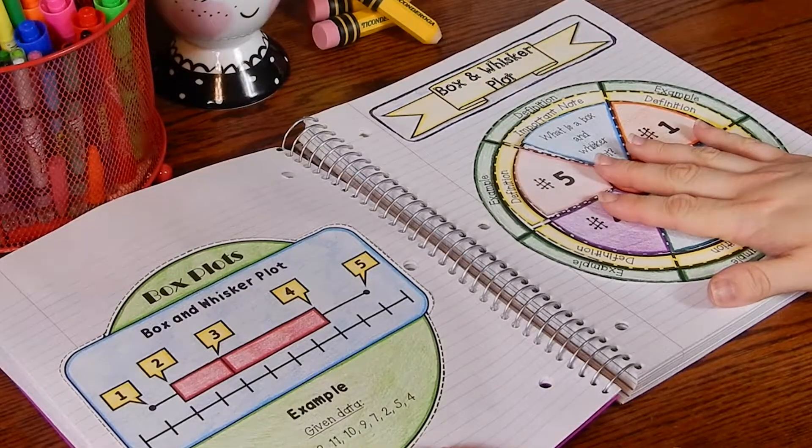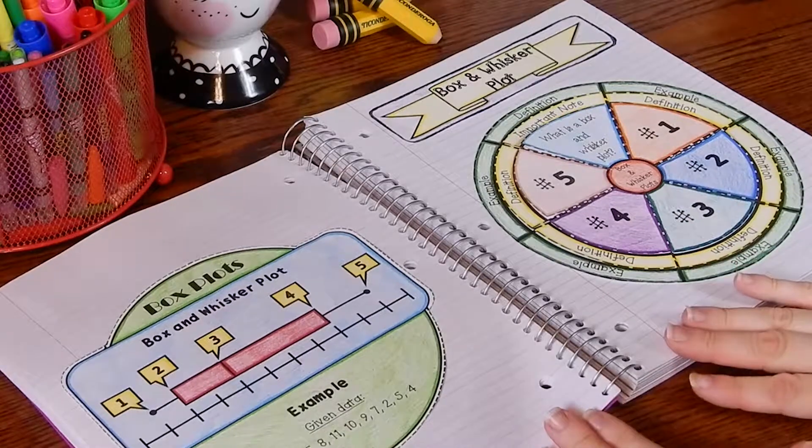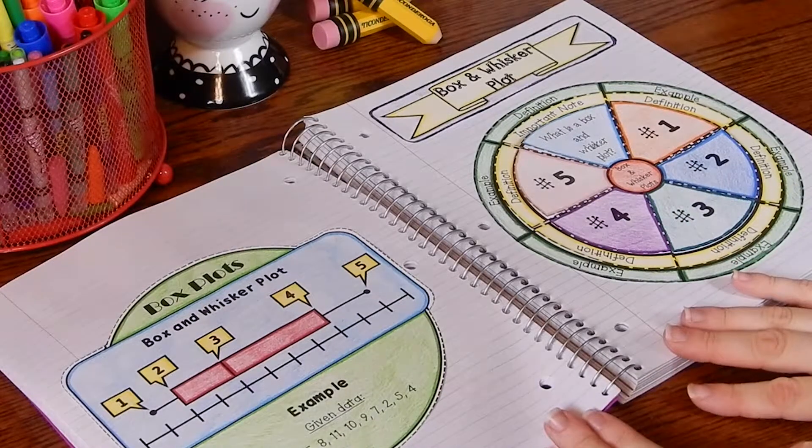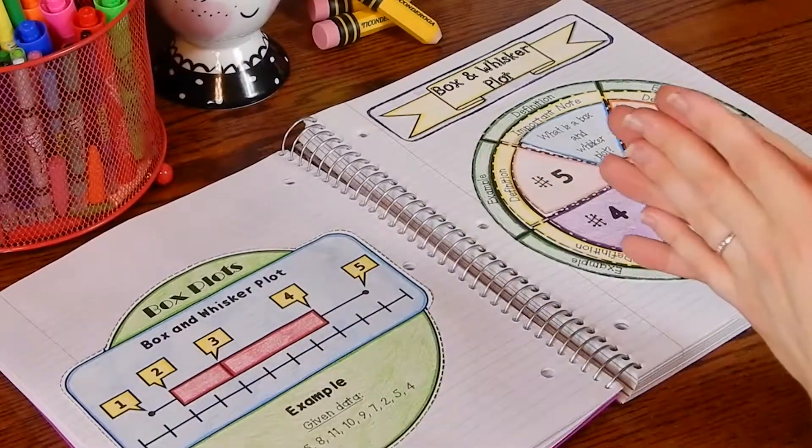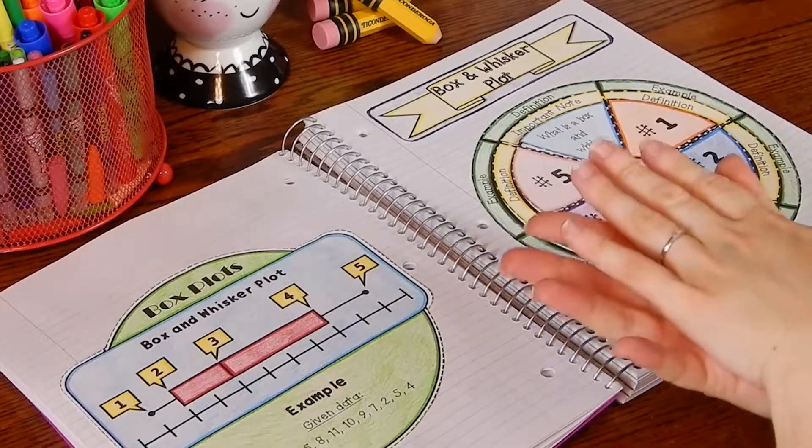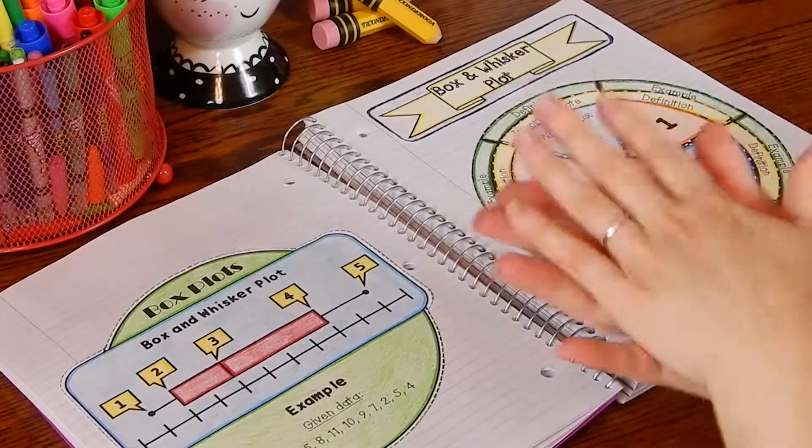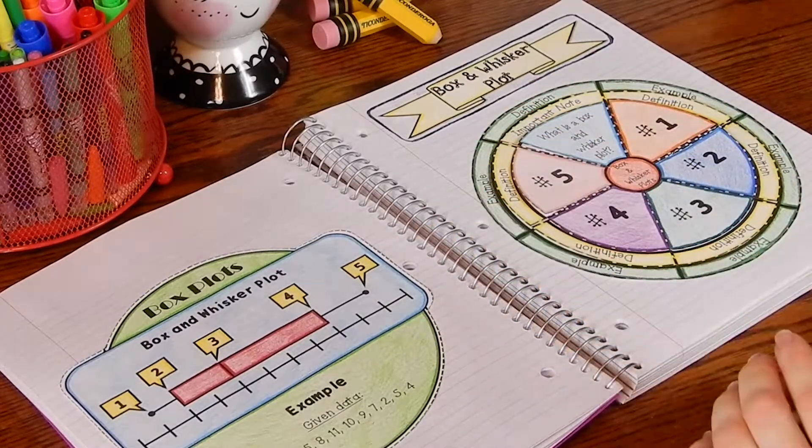If you do not have interactive notebooks, you can have students glue both of these back to back and students can use it as a handheld study tool and just keep going back and forth.